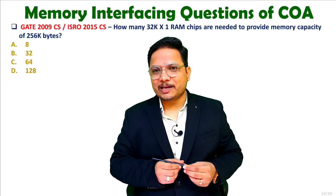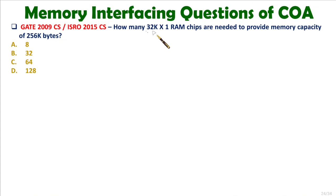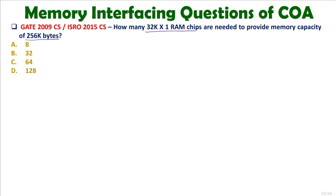Let us solve the first question. How many 32k×1 RAM chips are needed to provide a memory capacity of 256KB? The available chips are 32k×1 and the required size is 256KB. How many number of chips are required?